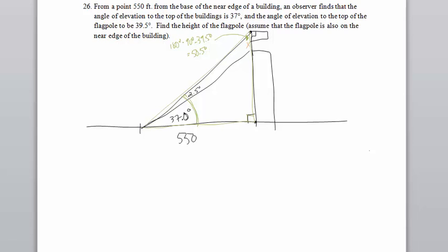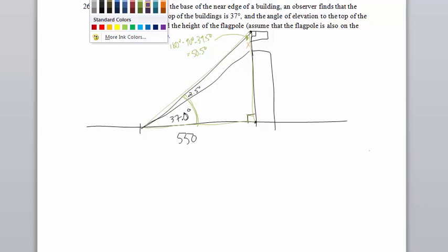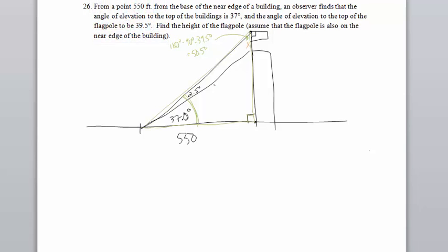How I'd like to approach this problem is I want to find this side right here, because this side is shared between the skinny oblique triangle, which I'll need the law of sines or cosines for, and this smaller right triangle. So I can use some basic trigonometry to figure that out.